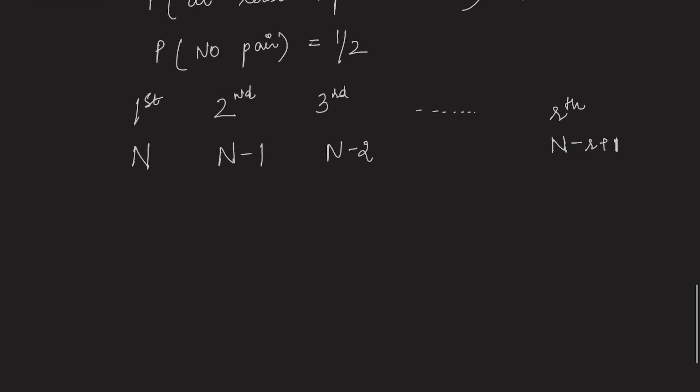Now, if we write the probability, the probability of no match is n by n for the first person, n minus 1 by n for the second person and for the rth person, it is n minus r plus 1 upon n. If we simplify it, it will come out to be n factorial upon n minus r factorial into n to the power r and according to question, it is equal to 1 by 2.